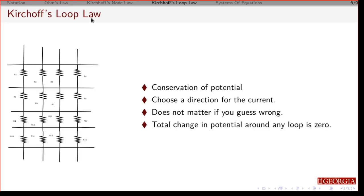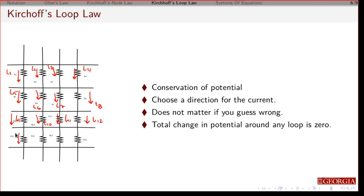The final one is Kirchhoff's Loop Law — this is a conservation of energy. The idea is that you have a big, complicated circuit, and the first thing you do is make assumptions about which way the currents are going: I1, I2, I3, I4, and so on. If you guess wrong and the current is really going in a different direction, you'll just get a negative value, and you've got to be careful how you interpret what that means.